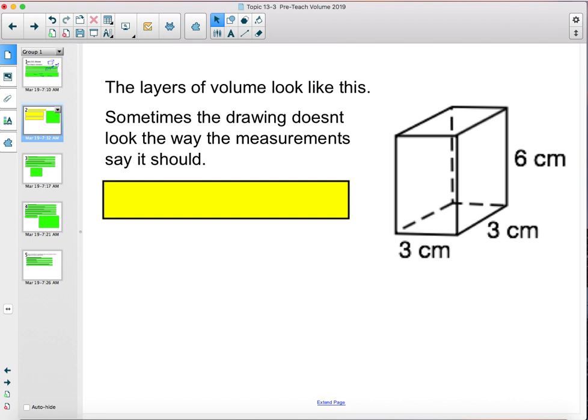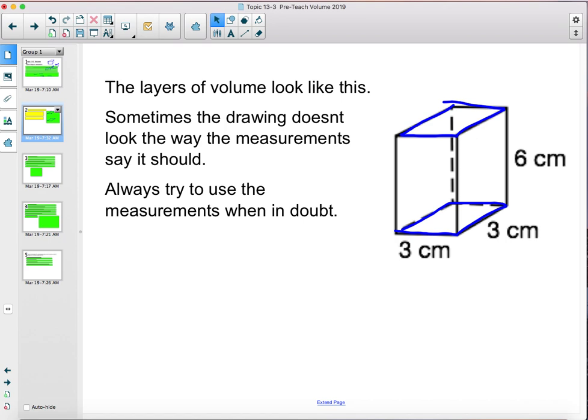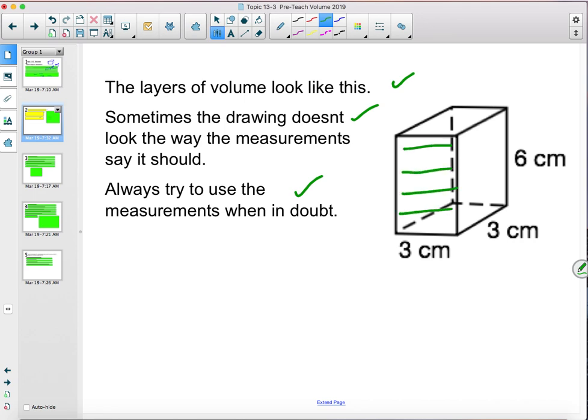Sometimes, and this is important, the drawing does not look the way the measurements say it should. Like in this case, a lot of kids will look at this and say, 3 by 3 means that shape is a square, but when they look at it, they'll say this does not look like a square. In that case, you always want to rely on the measurements. When in doubt, trust the measurements, not the drawing. You follow the measurements. The drawing may not always look the way the measurements say it should look. And you should trust the measurements when you're in doubt. And think of it as layers of your base, and that's how you multiply.